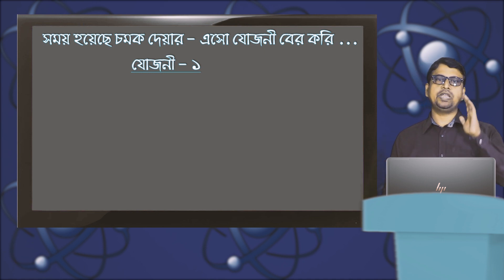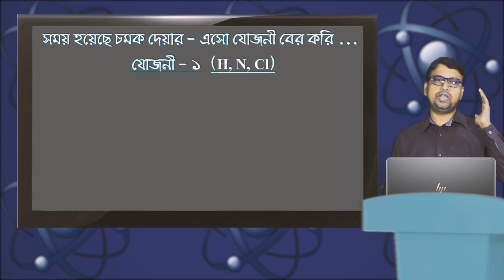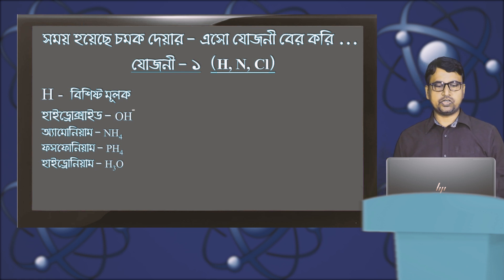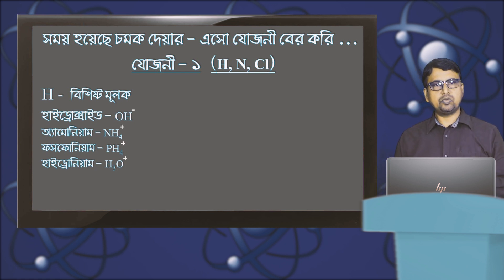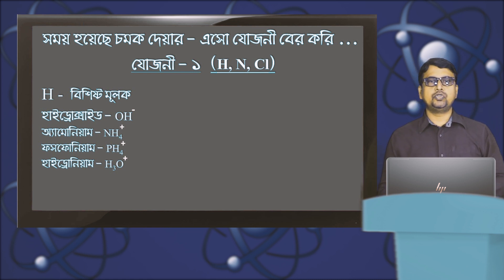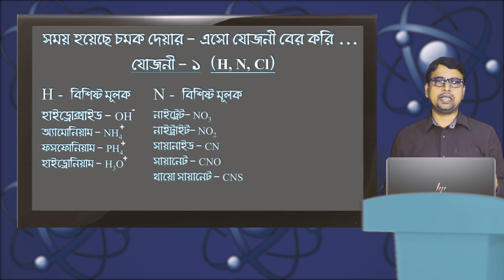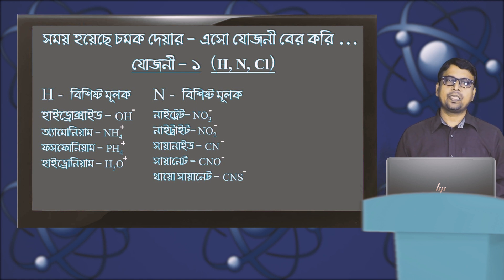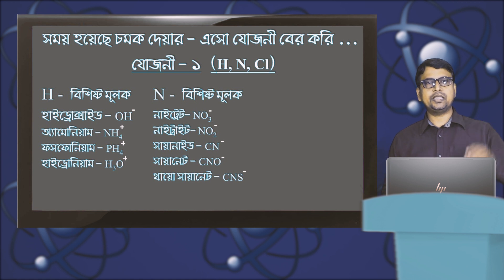Let's start the first one. If we are looking at two elements, we will have hydrogen 1. Hydrogen, ammonium, phosphorus and hydrogen is a hydrogen. When we have nitrogen, we have 1 nitrogen. So NO3 is nitrate, NO2 is nitrite, CN is cyanide. CN contains 1 nitrogen.